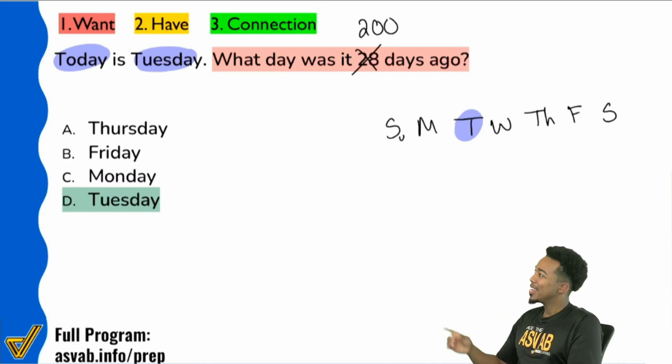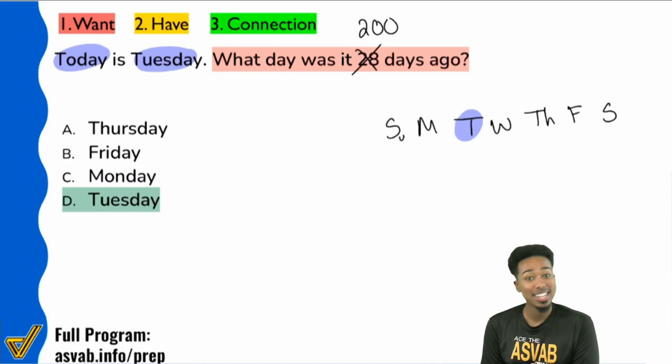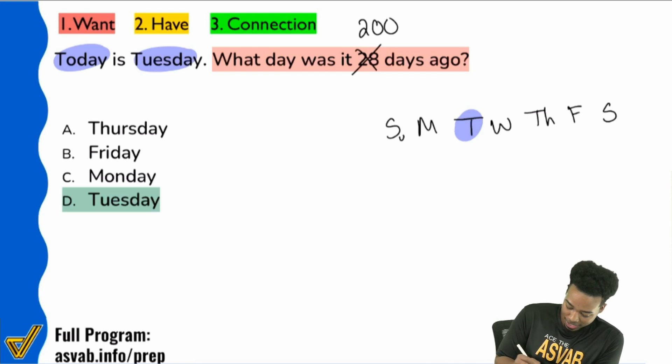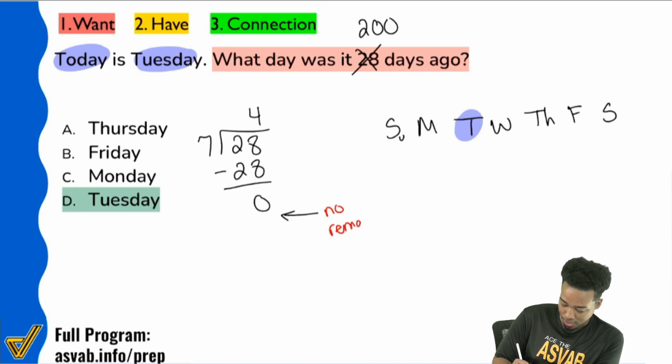So if we look at something like 28 days, well seven can go into 28. If we do this, watch: seven into 28, that's a perfect four. Seven goes into 28 four perfect times and there is no remainder. No remainder.